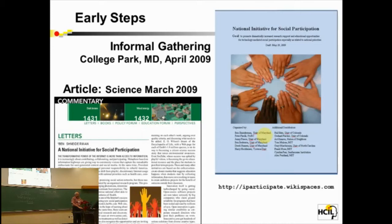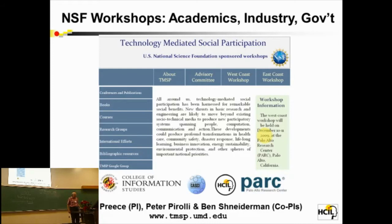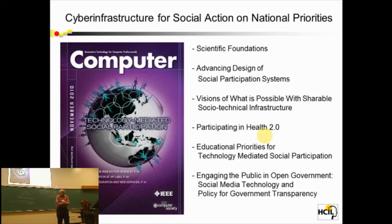Jenny and I went to get NSF funding with our colleague Peter Paroli, and ran two workshops — one on the West Coast and one on the East Coast — bringing together 30 people in each location representing industry, government, and academia. We wrote seven papers which appeared in a special issue of IEEE Computer in November 2010, laying out the territory. We published in IEEE Computer because we wanted to reach the technology people; they gave us a fast route to publication, and although the workshops were held in early 2010, we were in print by November and reached a large audience.